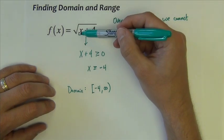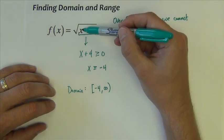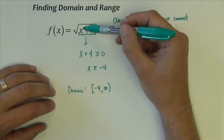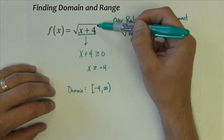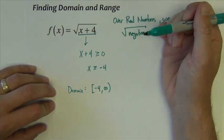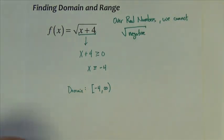For instance, negative five for x, negative five plus four would be negative one. We cannot square root the negative one. So negative four is the smallest value that we can use.